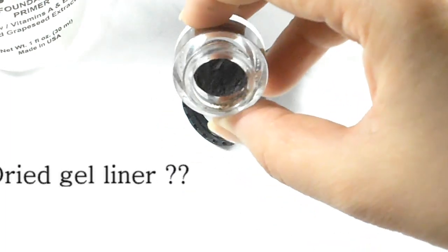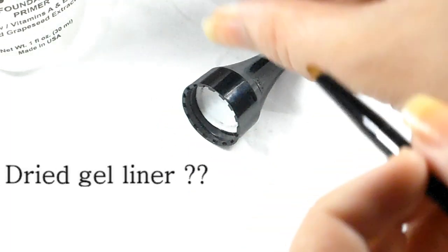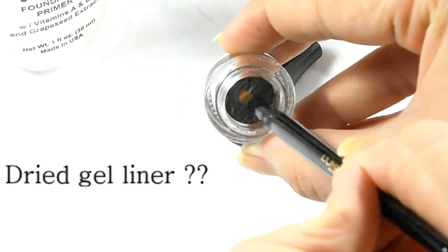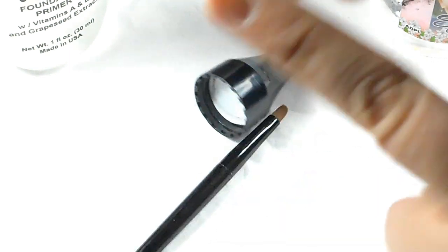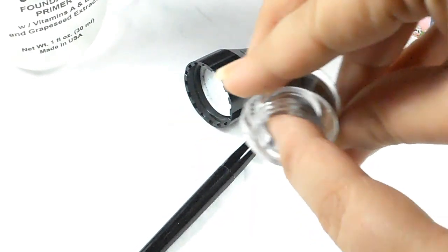Hi everyone, so today's video is going to be a DIY video. If you have any dried out gel eyeliner, just take it out. We need just a few more ingredients that you can easily find around and we are good to go.